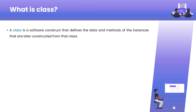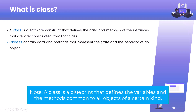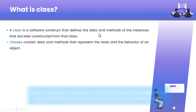A class is nothing but a software construct that defines the data and methods of the instances that are later constructed from that particular class. Classes contain data and methods that represent the state and the behavior of an object. The data will represent the state, and the method will represent the behavior of an object.